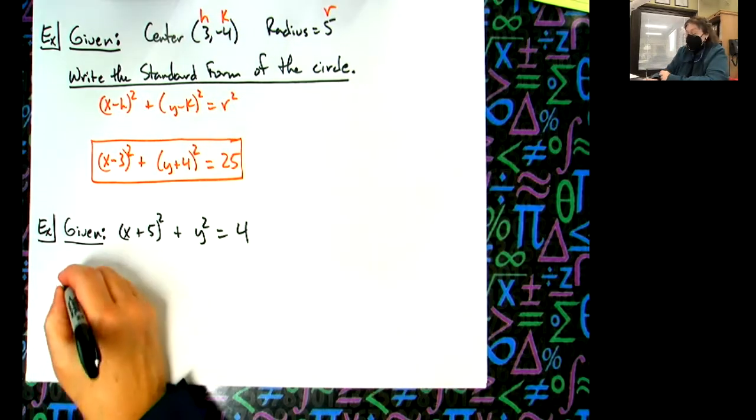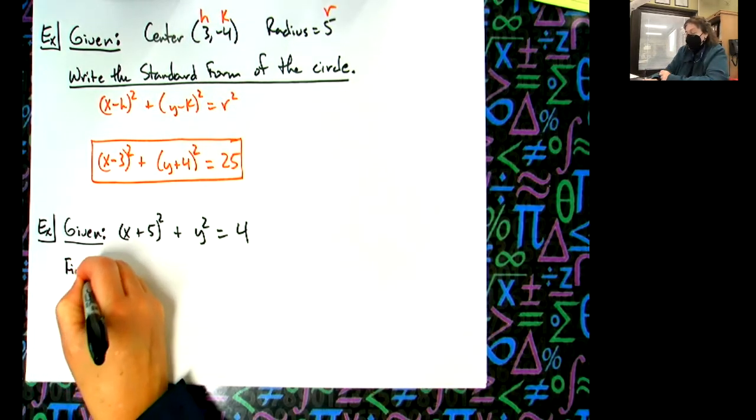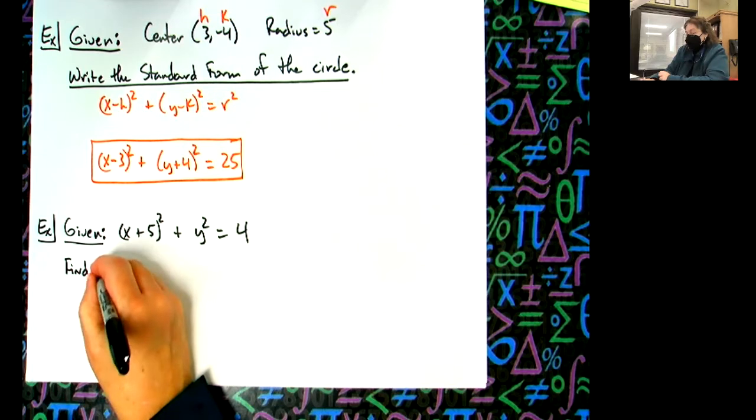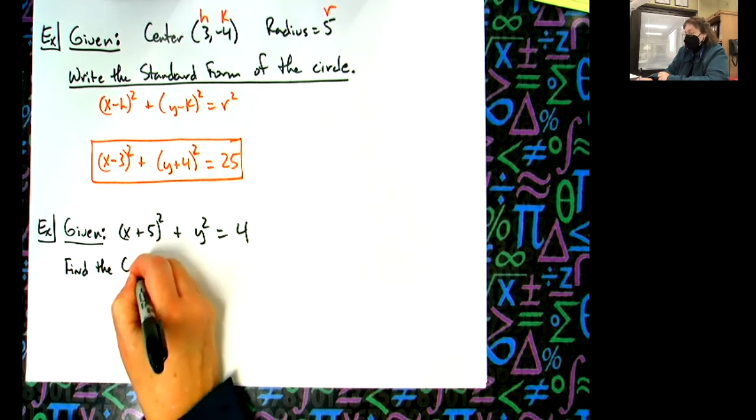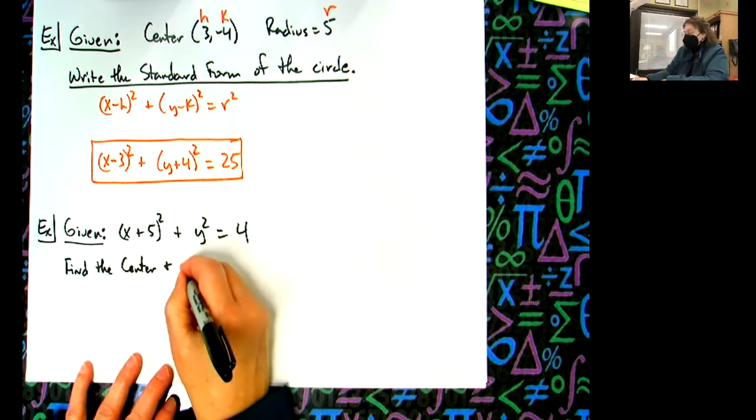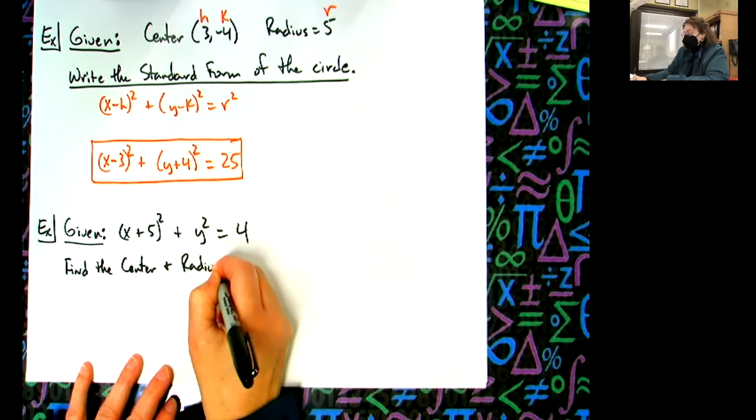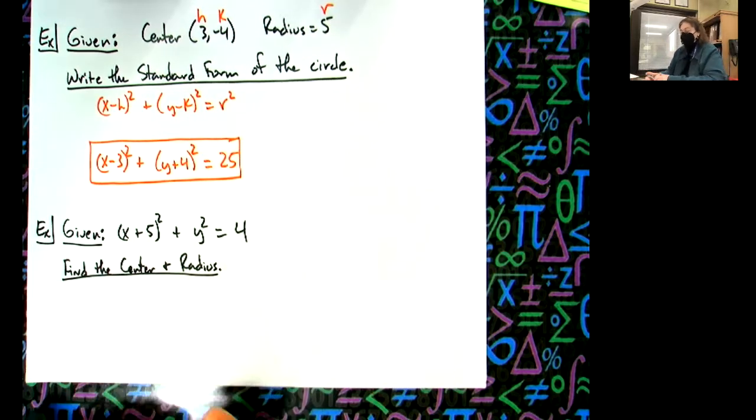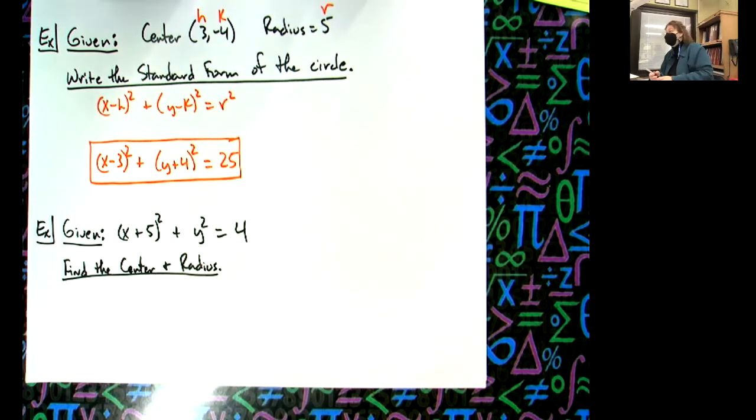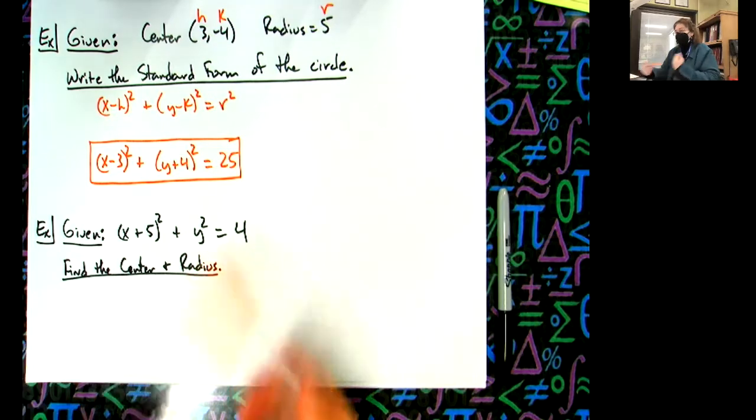Now from here I should be able to ask you to find the center and radius. So there's the directions: find the center, find the radius. You're just going backwards now - you've got to pull the information out of the equation.